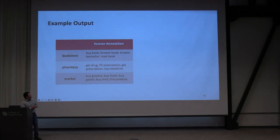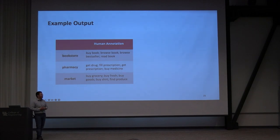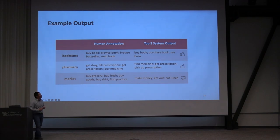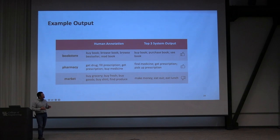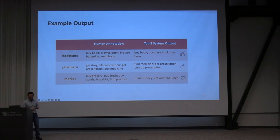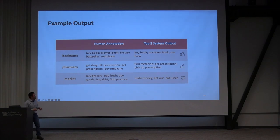Here are some examples from the dataset. We provided locations to human annotators and asked them for typical activities. For bookstore: buy book, browse book, browse bestseller. For pharmacy: get drug, fill prescription, get prescription. For market: buy grocery, buy fresh. On the right side is our system output — for bookstore and pharmacy our system performed well, predicting buy book, purchase book, find medicine, get prescription. Evaluation is difficult because even the same meaning can be expressed in many different ways. For market, there is a polysemy issue where our model says 'make money,' referring to the financial market rather than the grocery store.